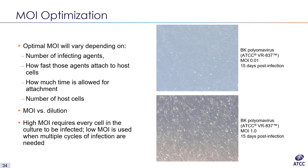First, I will go over MOI optimization. MOI, or multiplicity of infection, represents the ratio of infectious agents — whether a phage or virus — to infectious targets, most commonly cells of a tissue culture or embryonic egg. Optimal MOI varies depending on the number of infecting agents, how quickly those agents attach to host cells, how much time is allowed for attachment, and how many host cells there are. MSET virology prefers to use MOI versus simple dilution of the virus, because MOI depends on the titer of the virus from a TCID50 or plaque assay, while dilutions do not.